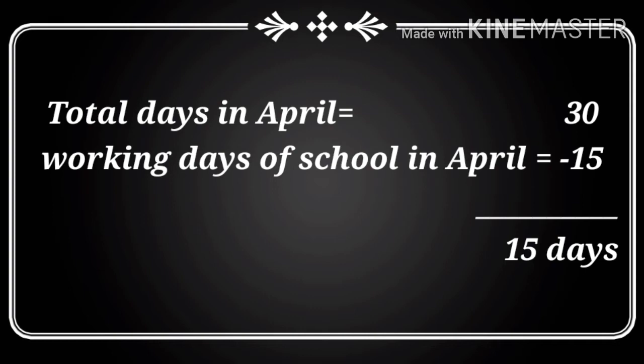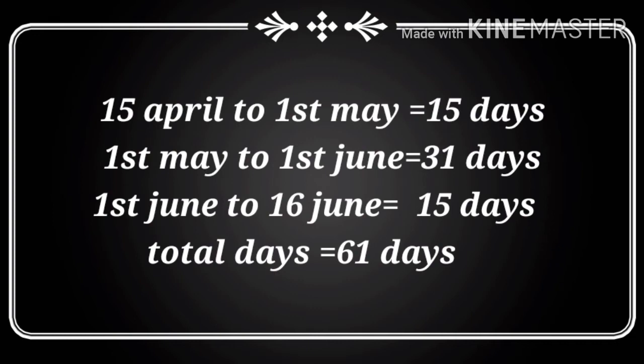So total vacation: school reopens on 16th June. From 15th April to 1st May we get 15 days vacation. From 1st May to 1st June is 31 days, and from 1st June to 16th June is 15 days. Sometimes we include the last date in our calculations and sometimes we do not.